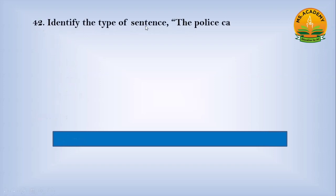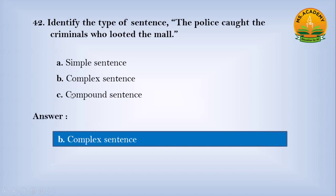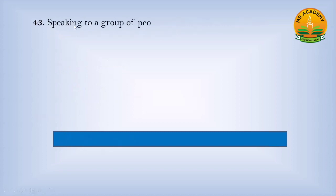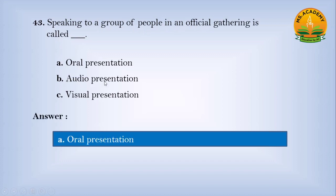Identify the type of sentence: 'The police caught the criminals who looted the mall.' Option A Simple sentence, option B Complex sentence, option C Compound sentence. Answer: B. Number Complex sentence. Speaking to a group of people in an official gathering is called dash. Option A Oral presentation, option B Audio presentation, option C Visual presentation. Answer: A. Number Oral presentation.